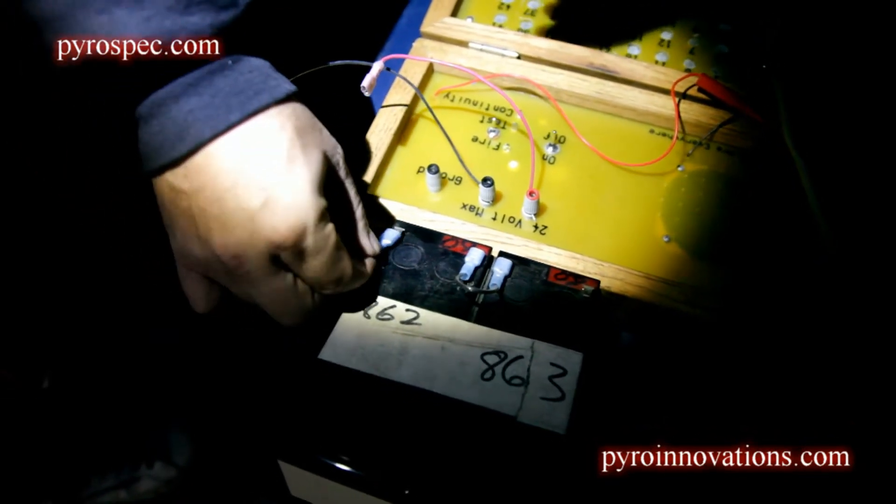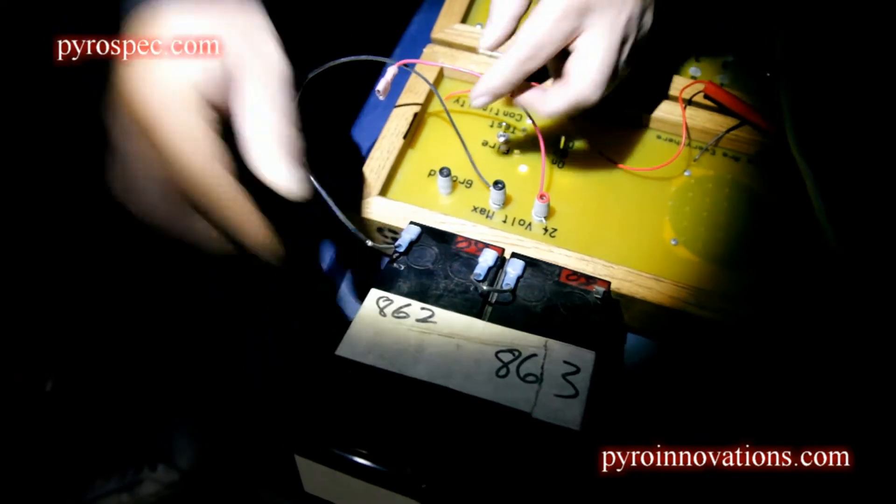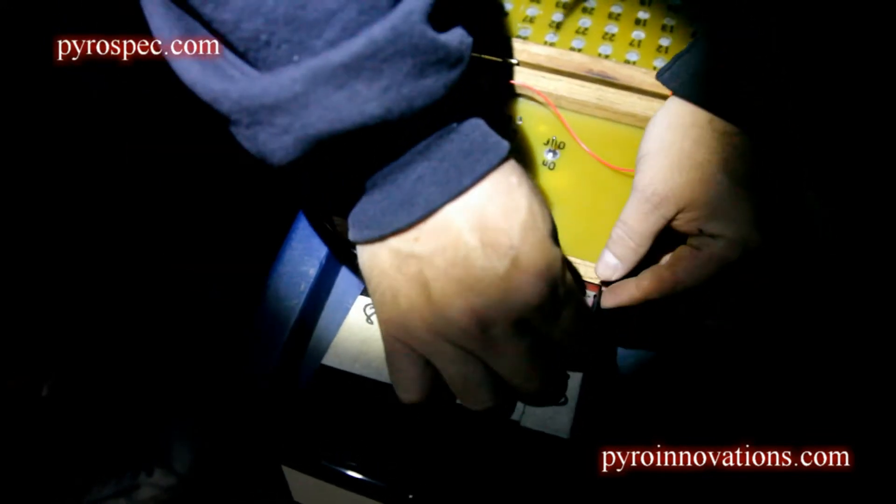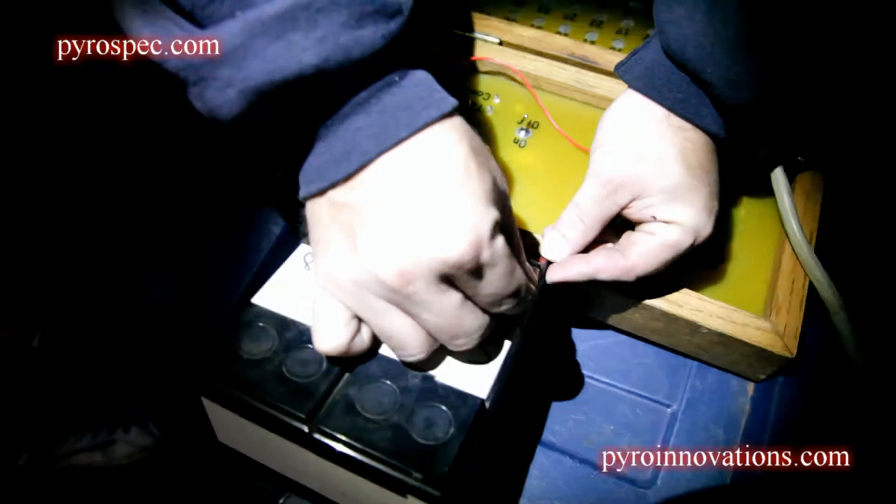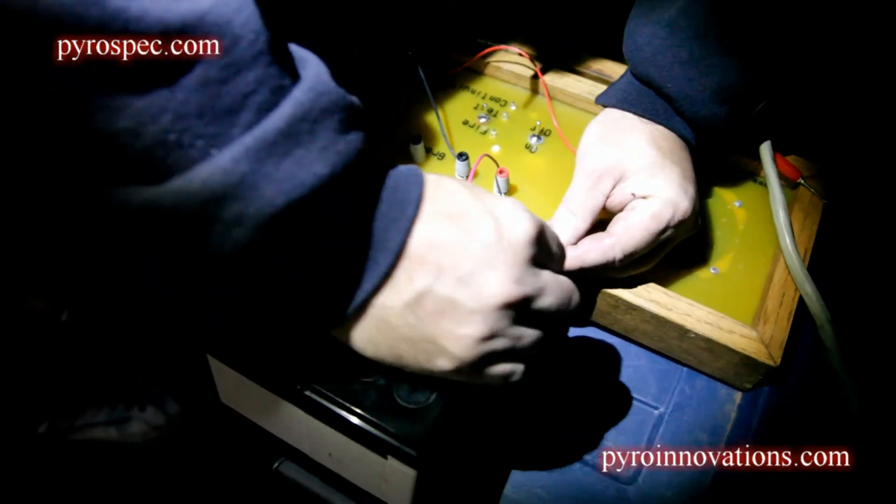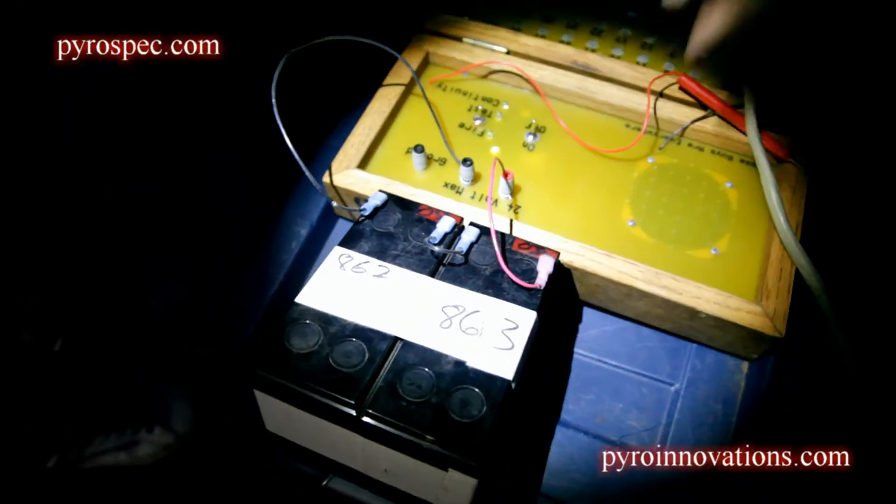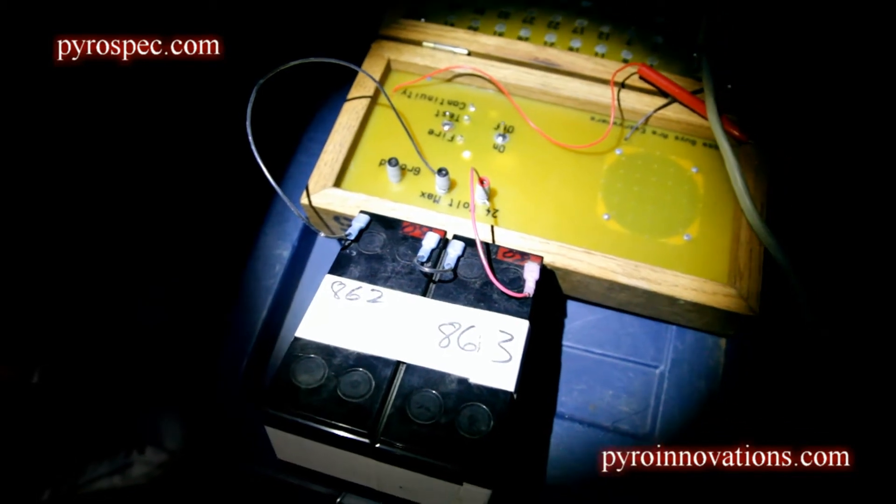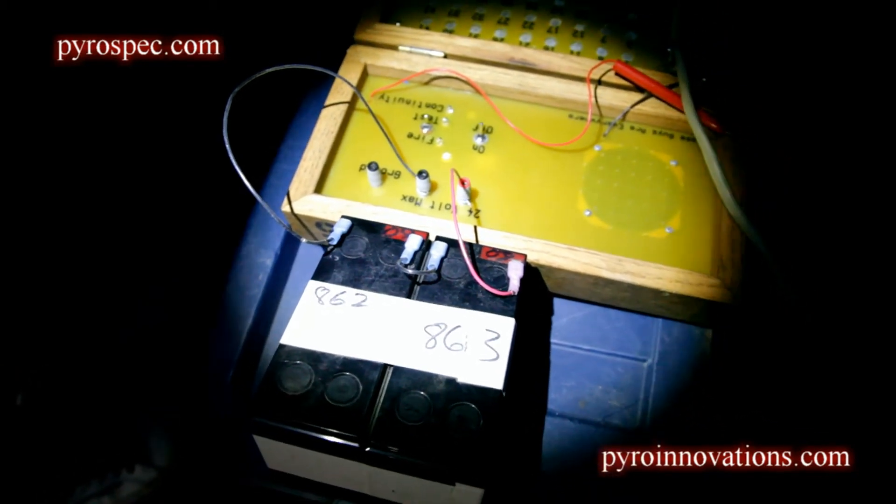You apply the negative lead to the negative side of battery one and the positive lead to the positive side of battery two. This now gives you a 24-volt series circuit which is going to power your firing system.